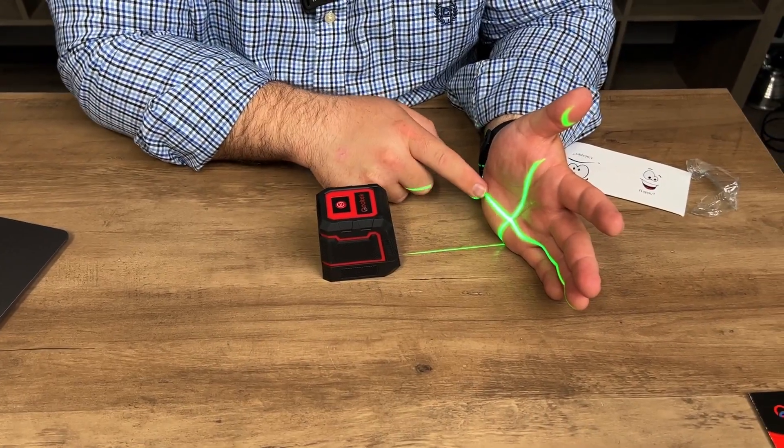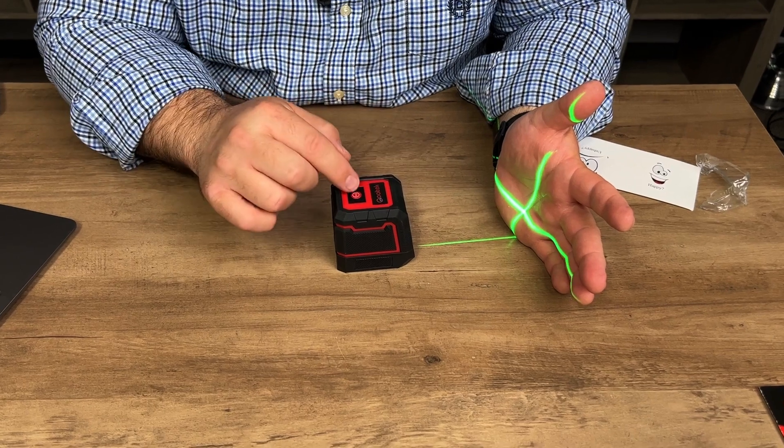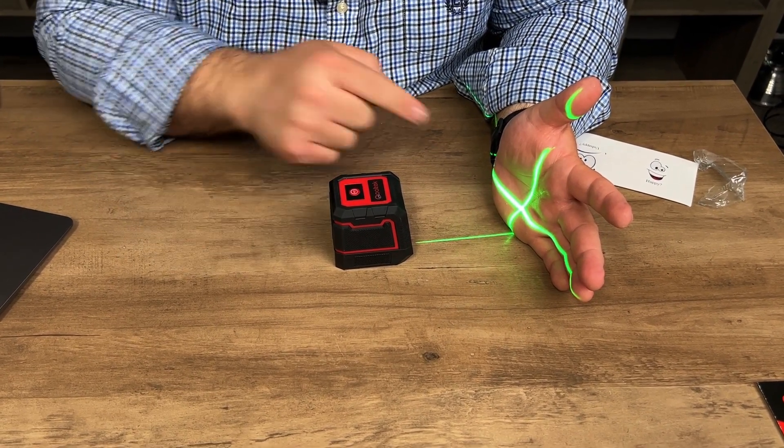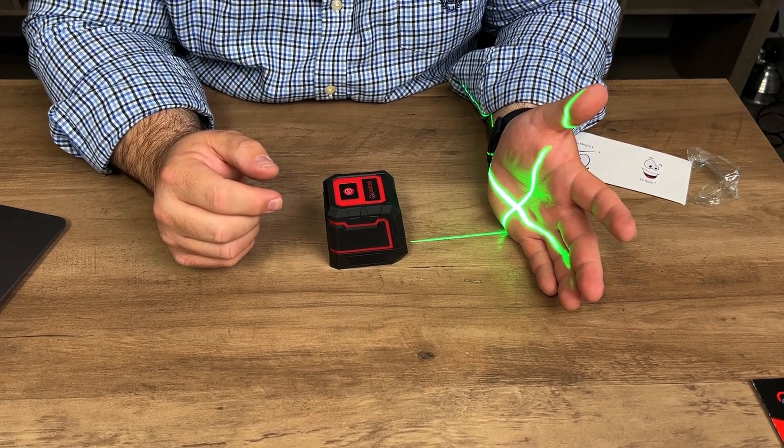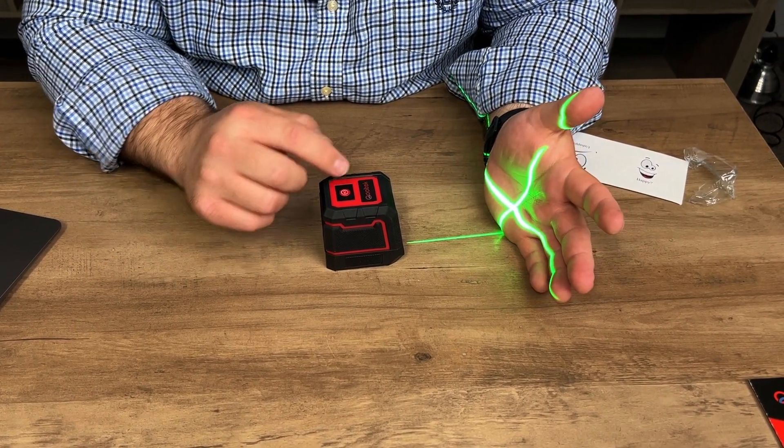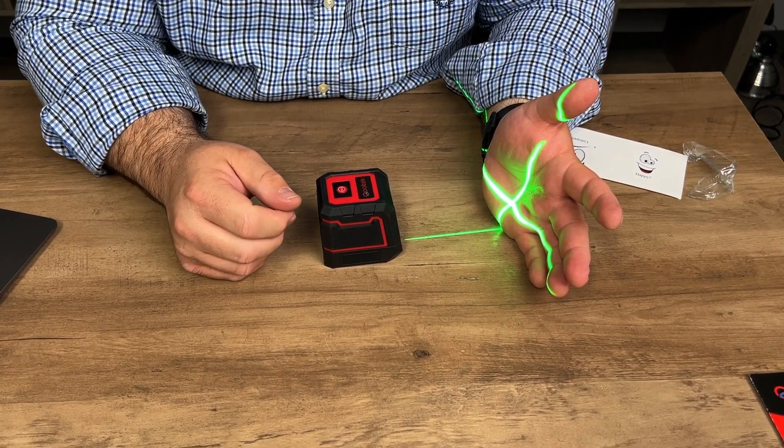So as you can see the laser there on my hand, you can control the brightness of that by pressing the power button. If we press it once, it goes up a little bit brighter. Press it again, it gets to a third level of brightness, which is actually pretty bright. And you can go back through those just by pressing the power button.